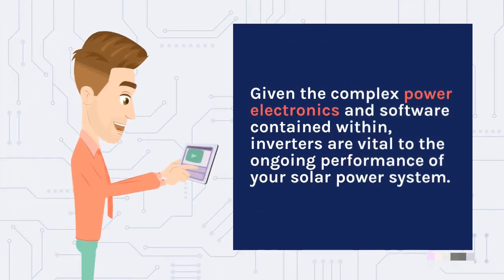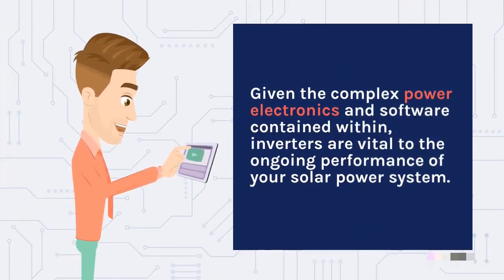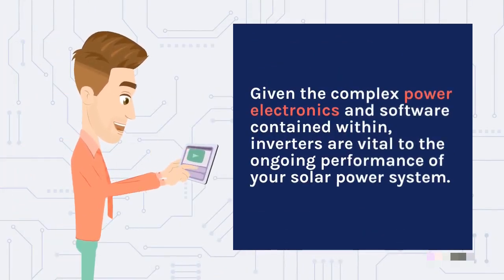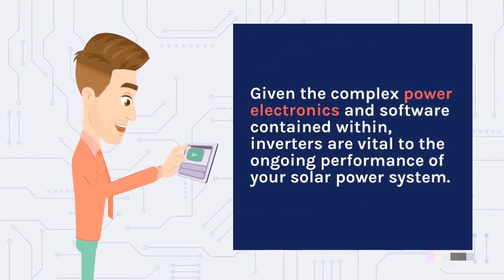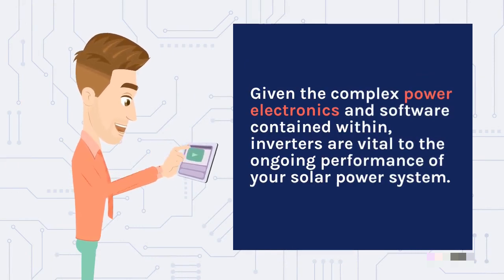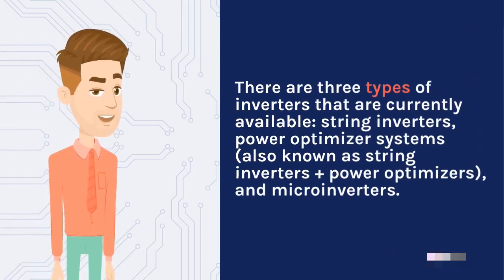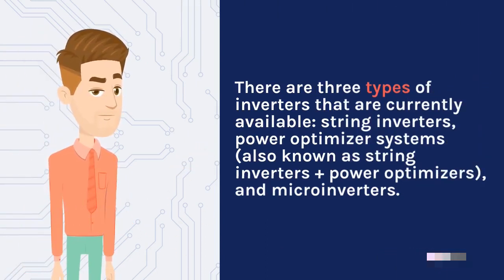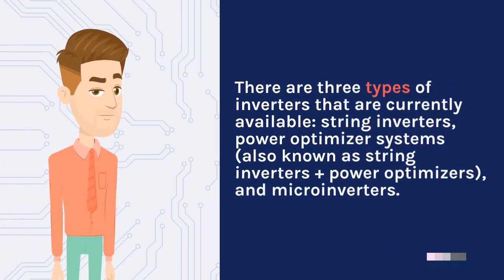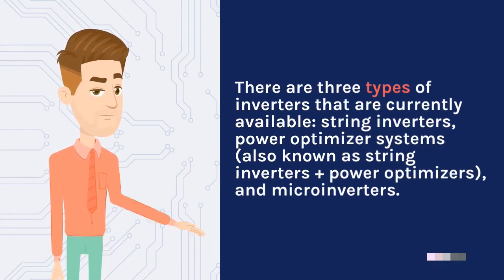Given the complex power electronics and software contained within, inverters are vital to the ongoing performance of your solar power system. There are three types of inverters that are currently available: string inverters, power optimizer systems, also known as string inverters plus power optimizers, and microinverters.